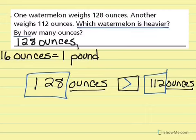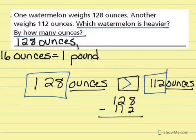But the second part says, by how many ounces? So I have a second step. So I need to subtract 128 minus 112, so 16. By how many ounces? By 16 ounces.